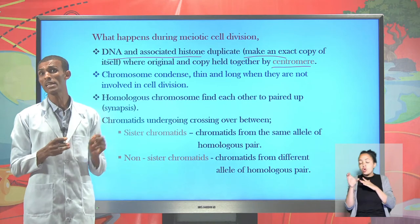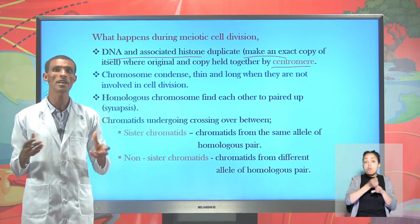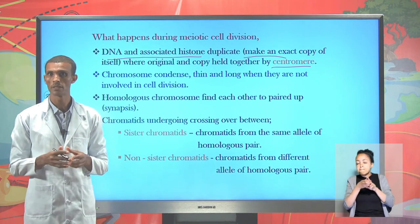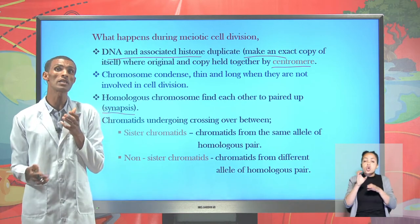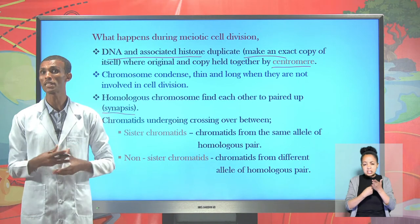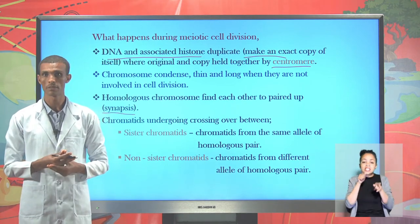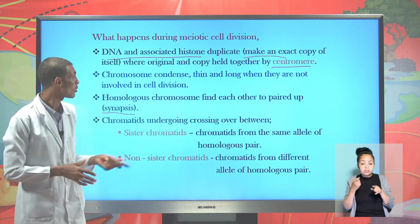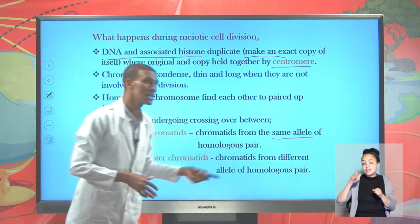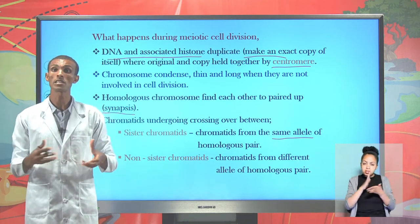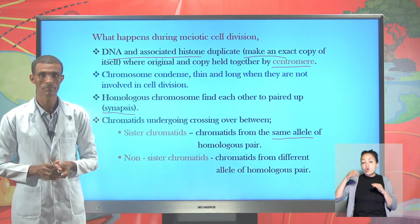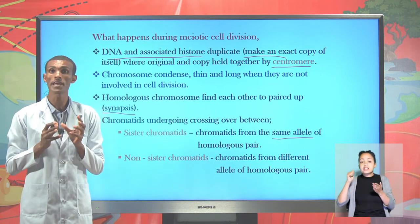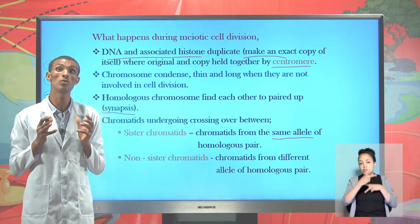One critical activity is that homologous chromatins come together and pair up — a process called synapsis. Another feature that differentiates meiosis from mitosis is chromatins undergoing crossover. This crossover may take place between sister chromatids from the same allele in a homologous pair, or between non-sister chromatids from different alleles in a homologous pair. This crossover and synapsis are very important during the process of meiosis.